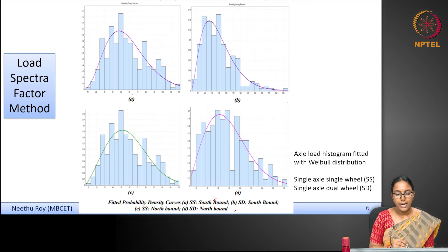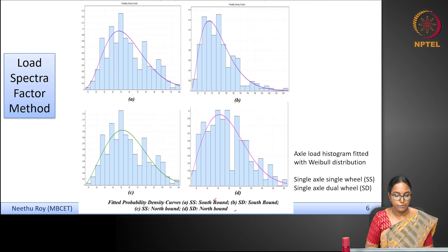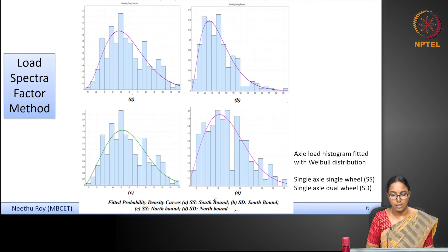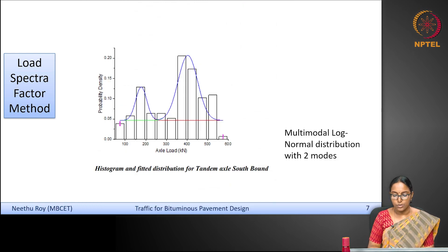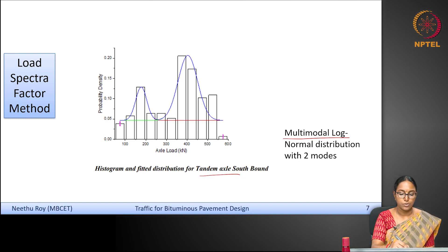You can see that the axle load distribution does not follow the same pattern for all directions — even on the same road, the northbound and southbound distributions are not matching, so they can have different distributions. One Weibull distribution is fitted here, but that need not always be the case; you may need different distributions for each load spectra. For the tandem axle in one direction, the histogram required a multimodal log-normal distribution.